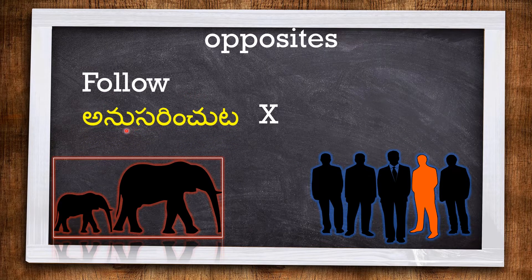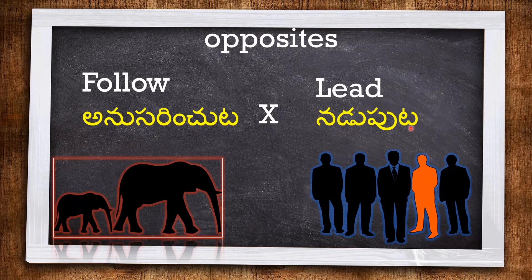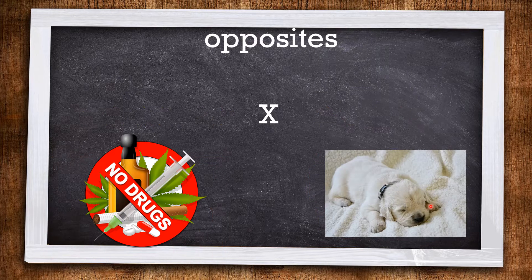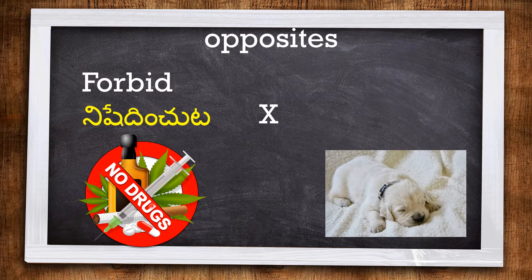The third one is FOLLOW — the baby elephant is following his mother. And the opposite of follow is LEAD. This man is leading his team of four members. Next one is FORBID, which means saying no.